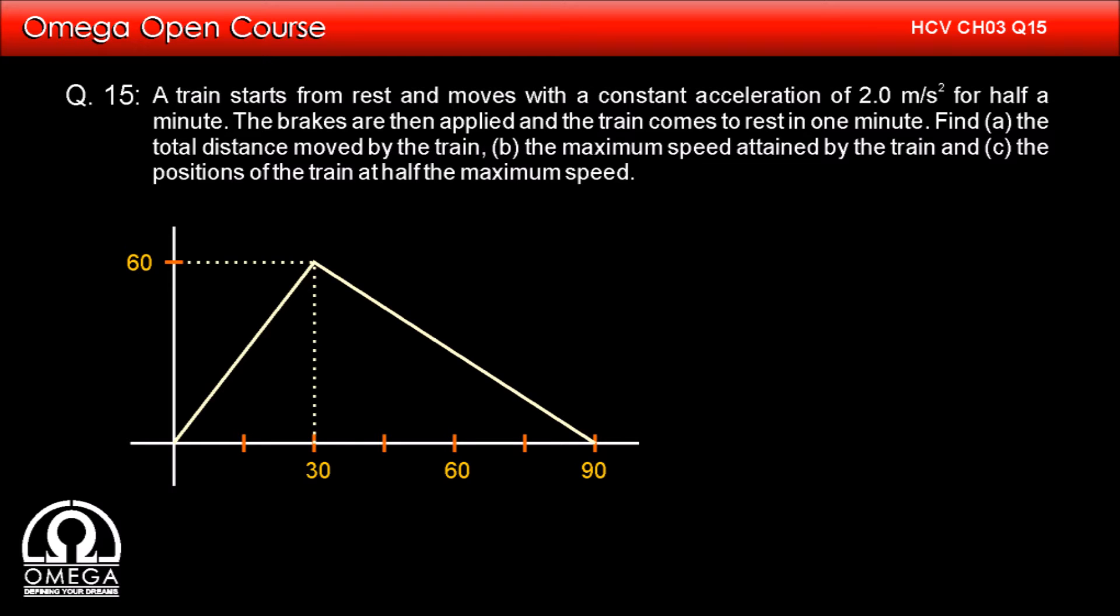As the acceleration of the train is 2 meter per second square, the slope of the graph will be 2, and in 30 seconds velocity will reach up to 60 meter per second. The graph will then go down to 0 in next 60 seconds.